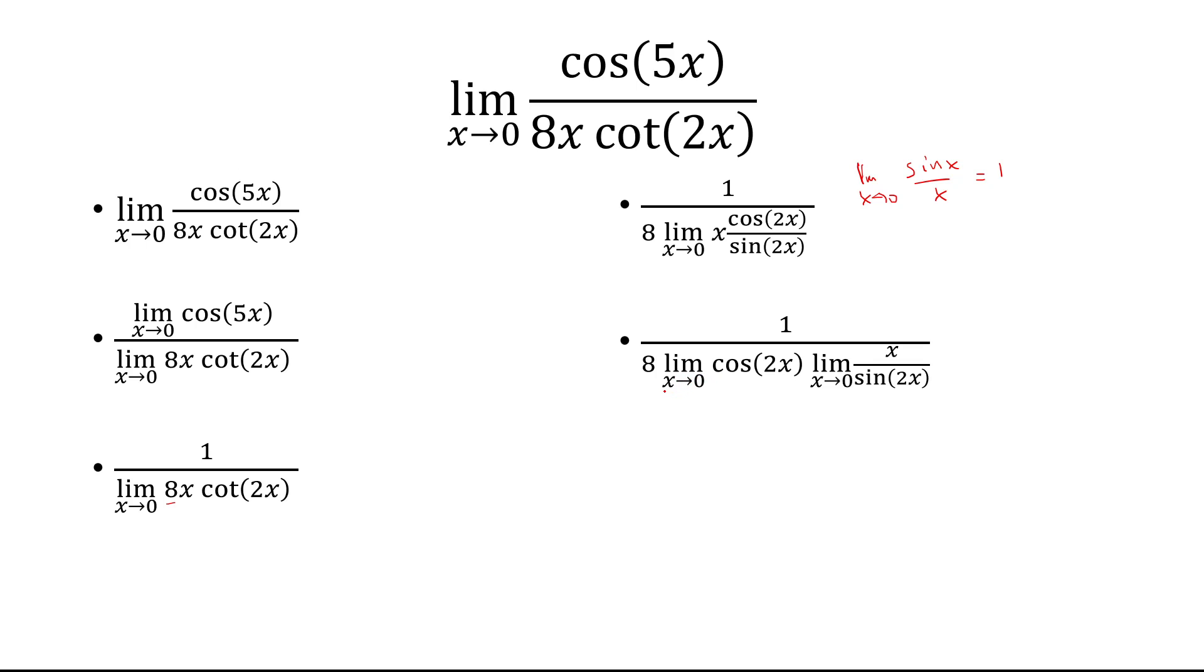And so to solve this limit, we just plug in x equals 0 to get 1. So 8 times 1 is just 8. And then all this comes down to solving the limit as x approaches 0 of x over sine 2x.